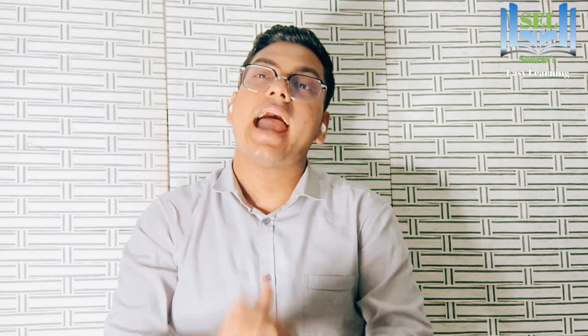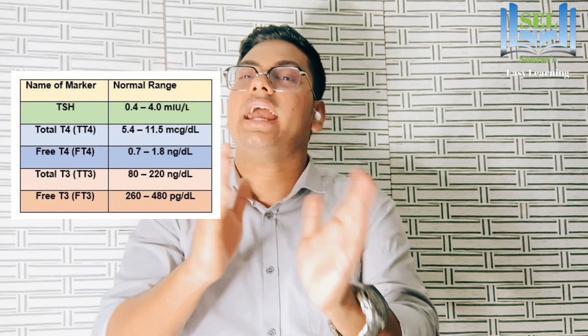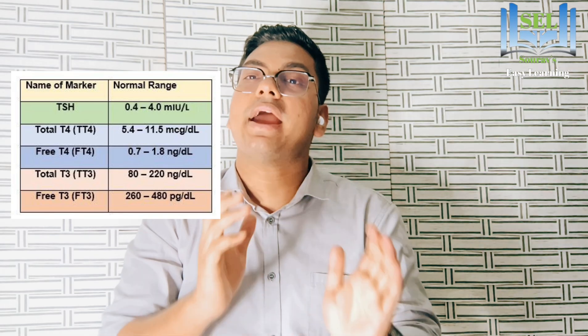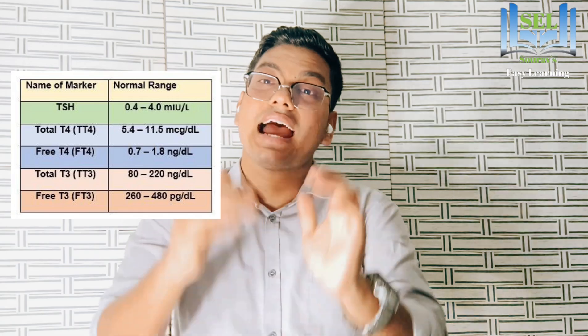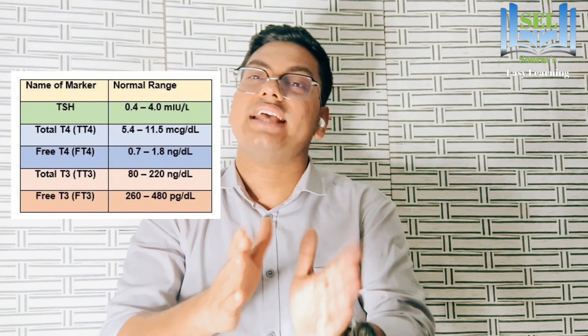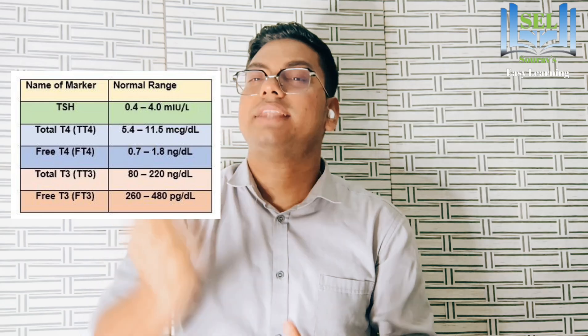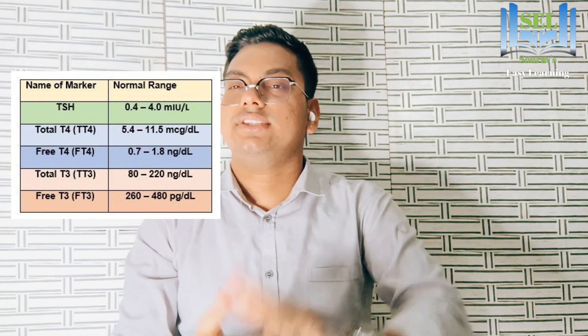For diagnosing thyroid disease, doctors run several types of tests. The main ones are TSH — thyroid stimulating hormone — blood test, free T3, free T4, total T3, and total T4. The normal range of TSH is 0.5 to 5 micro IU per mL. If TSH is high, it indicates hypothyroidism — underactive thyroid. If TSH is low, it means you have hyperthyroidism.